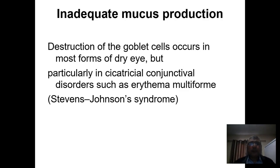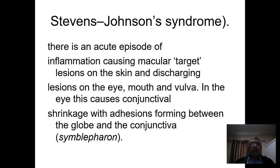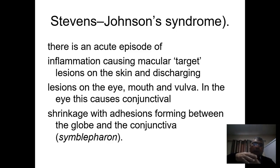The second component of the tear film is the mucous component. Inadequacy of mucin production occurs from destruction of the goblet cells, which occurs in most cases of dry eye, but particularly in cicatricial conjunctival disorders such as erythema multiforme or Stevens-Johnson syndrome. In Stevens-Johnson syndrome, acute episodes of inflammation cause target lesions in the skin, discharging eyes, mouth, and vulva. In the eye, this causes conjunctival inflammation, conjunctival shrinkage, and fibrosis with adhesions developing between the bulbar and palpebral conjunctiva. These adhesions restrict movement of the lids and globe and are called symblepharon.